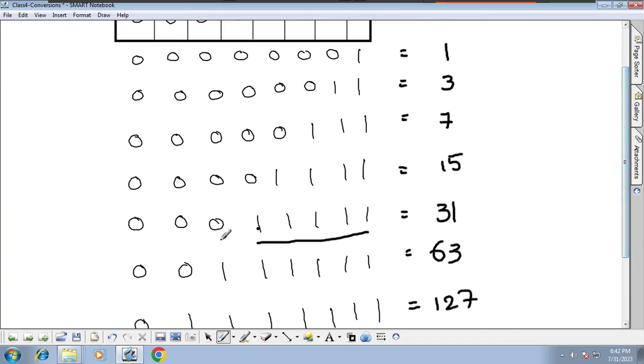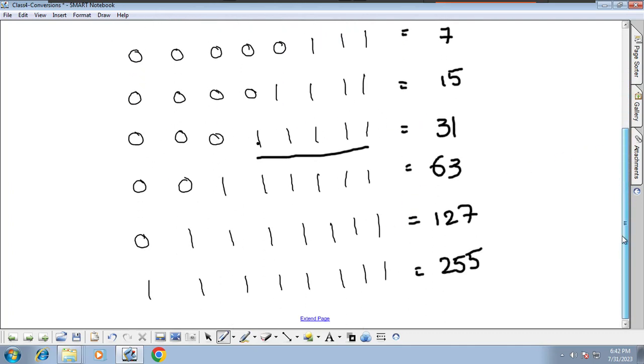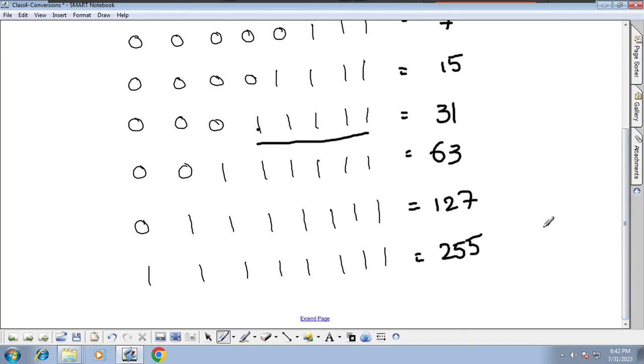If you look at this - zero, zero, zero, one, one, one, one - that's thirty-one. Zero, zero, one, one, one, one - sixty-three. Zero, zero, zero, one, one, one - that's seven. Like that, you can identify easily if you are doing practice a lot.